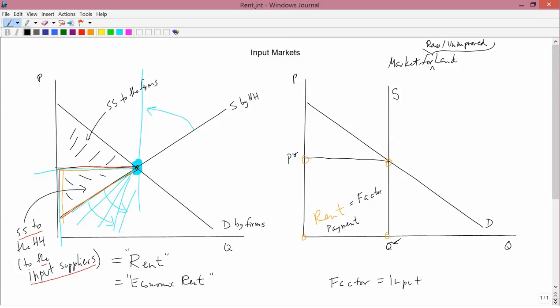And the rent is the whole factor payment. So when we're discussing the market for raw, unimproved land, the entire factor payment is economic rent.